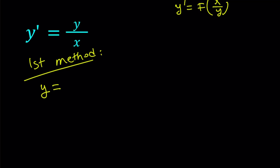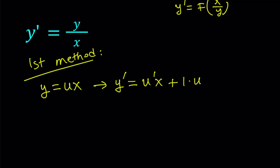I'm going to set y equals ux. From here, I can differentiate both sides to find out what happens with y prime. Now u is a function of x because y is a function of x. So if you differentiate this using the product rule — the derivative of the first function times the second, plus the derivative of x (which is 1) times the first function u — you can write y prime equals u prime x plus u.